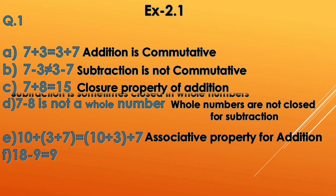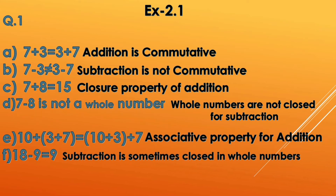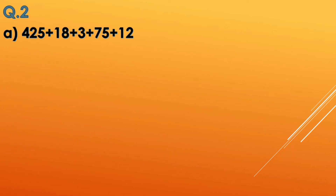For option f, 18 minus 9 equals 9. Sometimes when we subtract two whole numbers we get a whole number, so subtraction is sometimes closed in whole numbers.